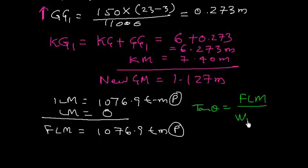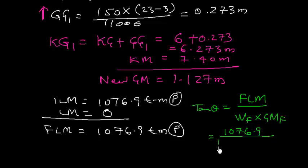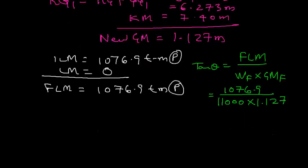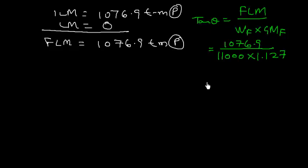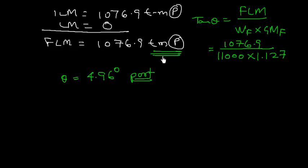The final list moment is 1076.9 ton meter towards port. Using tan(theta) = Final List Moment / (WF × GMF), we get tan(theta) = 1076.9 / (11,000 × 1.127). Solving gives theta = 4.96 degrees towards port, because the final list moment is towards the port side. That is the answer for stage 1.